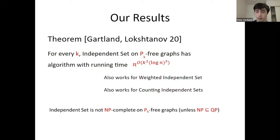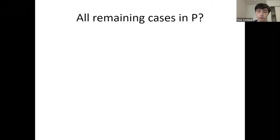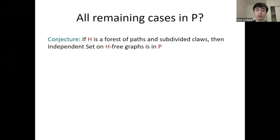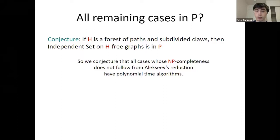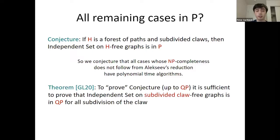For the remaining cases, we conjecture that if H is a forest of paths and subdivided claws, then independent set on H-free graphs is in P — all cases whose NP-completeness doesn't follow from Alekseev's reduction admit a polynomial time algorithm. To make proving this easier, we also prove in the same paper that to prove this conjecture up to quasi-polynomial runtime, it suffices to prove that independent set on subdivided claw-free graphs is in QP for all subdivisions of the claw. This means we need only focus on single subdivided claws, not forests of them.